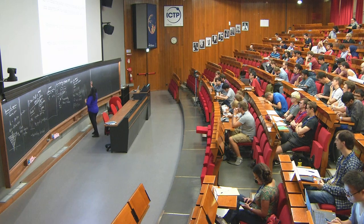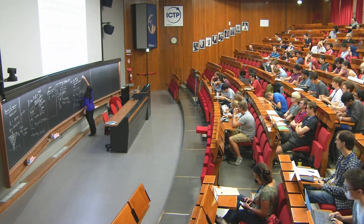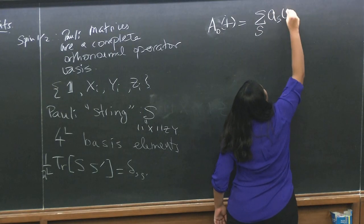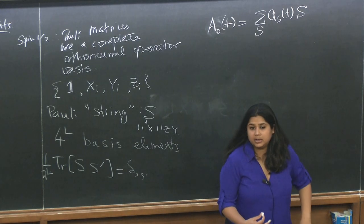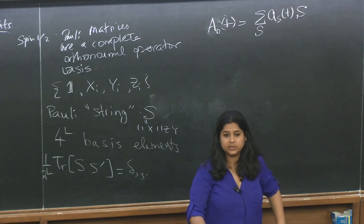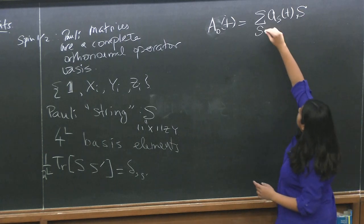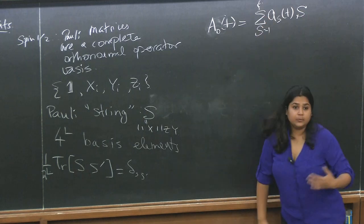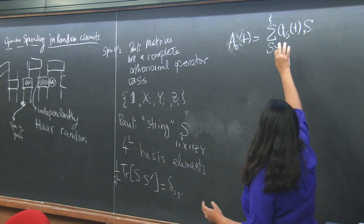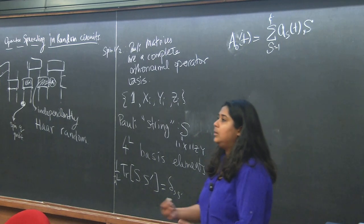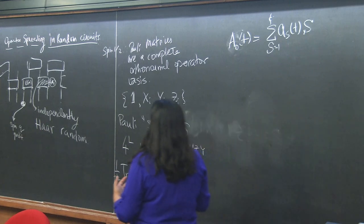Given that this is an orthonormal basis, you can take your time-evolving operator A-naught(T) and expand it in this basis of Pauli strings. The description of operator spreading is going to turn on describing how the coefficients A_S(T) evolve in time. Trying to describe how every one of those 4-to-the-L coefficients evolves in time is an exponentially hard problem. We want coarse-grained measures for describing operator spreading without needing knowledge of every coefficient.